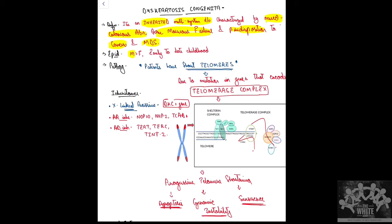Epidemiologically, it is more common in males because X-linked inheritance is the most common type. It can present in early to late childhood.